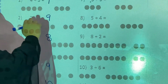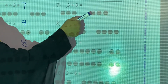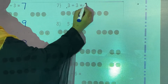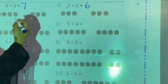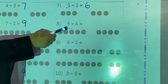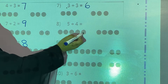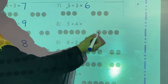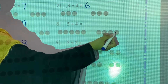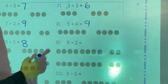Now 3 plus 3. Count: 1, 2, 3, 4, 5, 6. So 3 plus 3 is equal to 6. Now 5 plus 4. Count: 1, 2, 3, 4, 5, 6, 7, 8, 9. So 5 plus 4 is equal to 9.